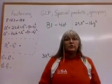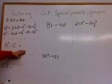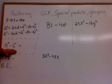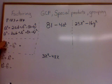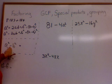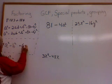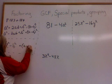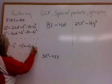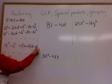For this next type of factoring we're going to use a special products rule: difference of two squares. The first term is a perfect square, the second term is a perfect square, and there's a subtraction sign — difference of two squares. The factor pattern for the answer is (a plus b)(a minus b). So let's try a couple following this pattern.